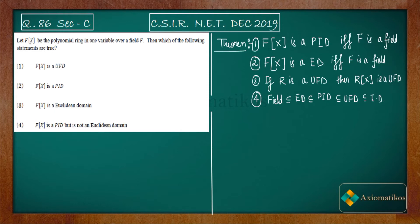What is given to you? Let f(x) be the polynomial ring in one variable over the field f. Which of the following statements is true? We have f as a field, so let us see these two definitions. If f is a field, then f(x) is a PID. If f is a field, then f(x) is